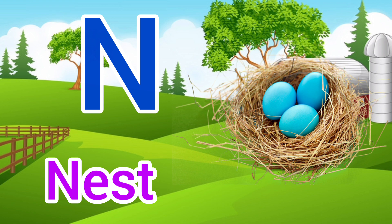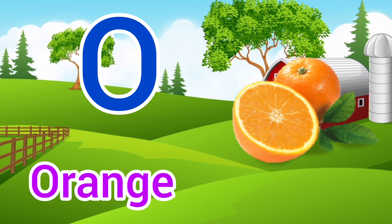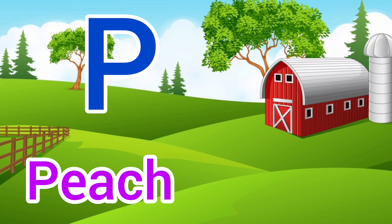O. O for Orange, Orange means Santra. P. P for Peach, Peach means Aadu.